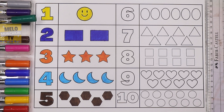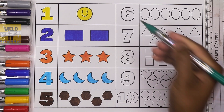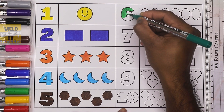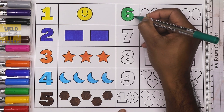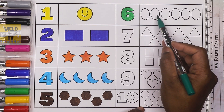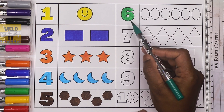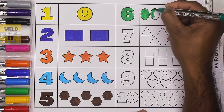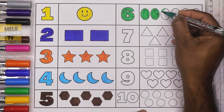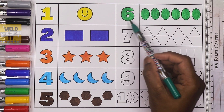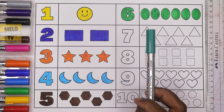Next I'll take dark green color — this is dark green color — to write number six. This is number six. And these are ovals. So six ovals, and this is dark green color.